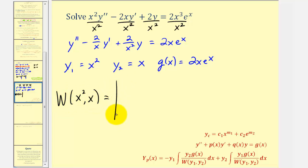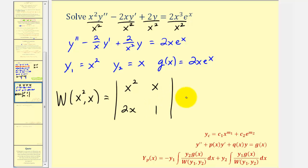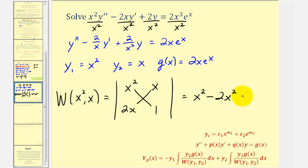The next step: let's go ahead and find the Wronskian of y sub one and y sub two. We'd have a two by two determinant where the first row would be y sub one and y sub two, and the second row would be their derivatives, so two x and one. So the Wronskian is going to be equal to x squared minus two x squared, or negative x squared.